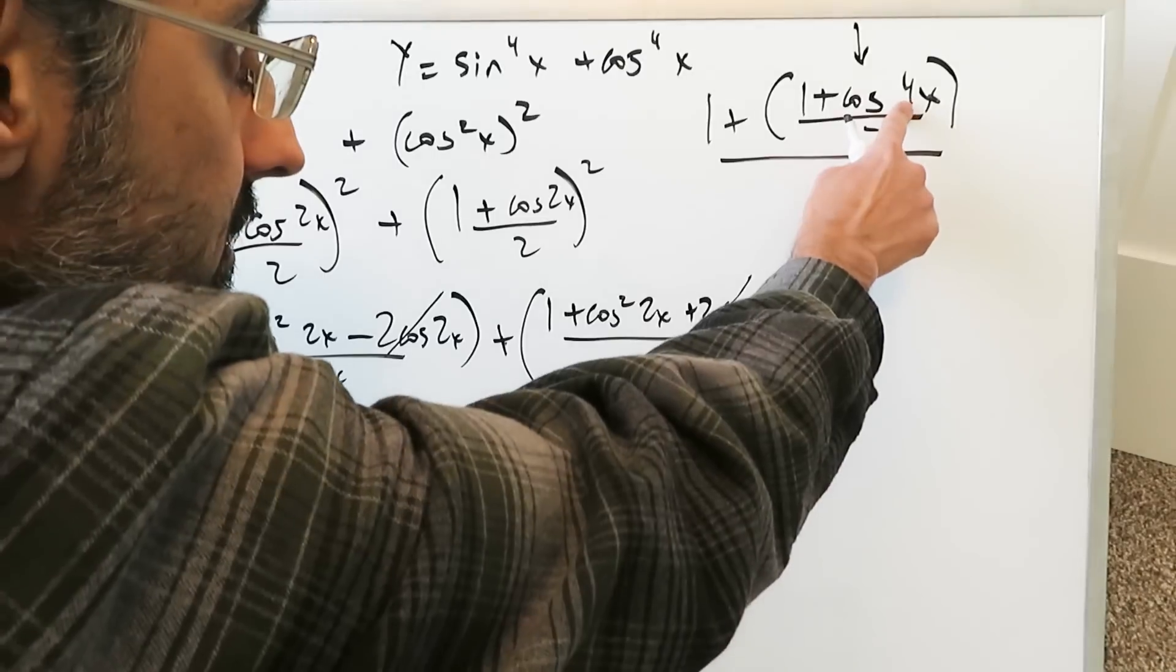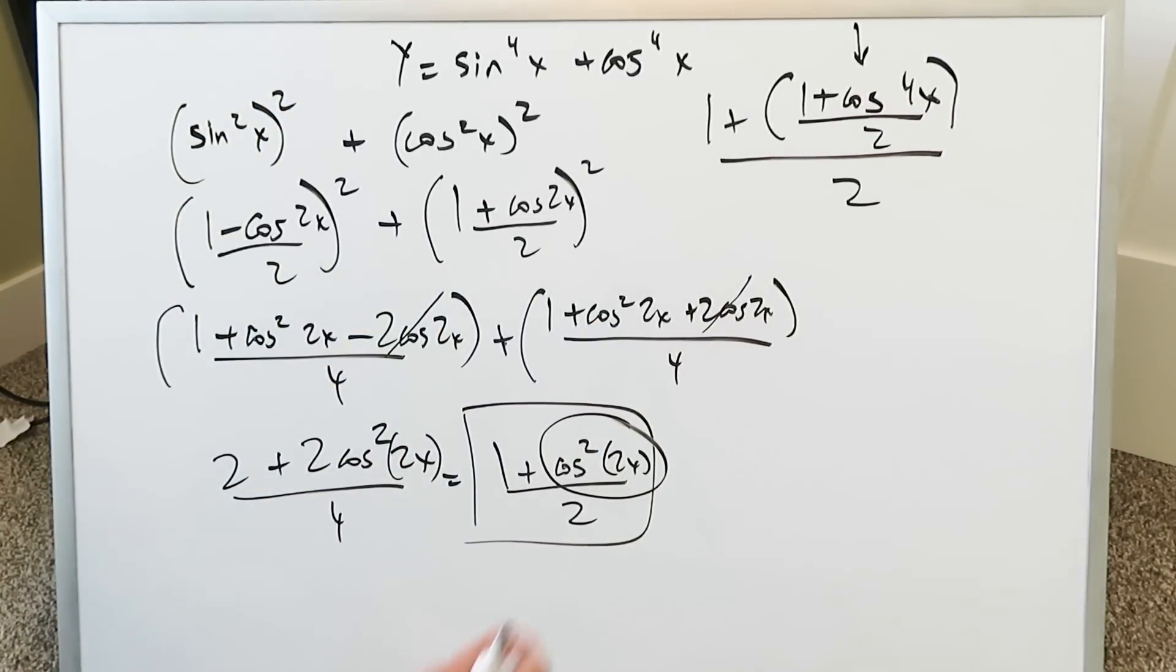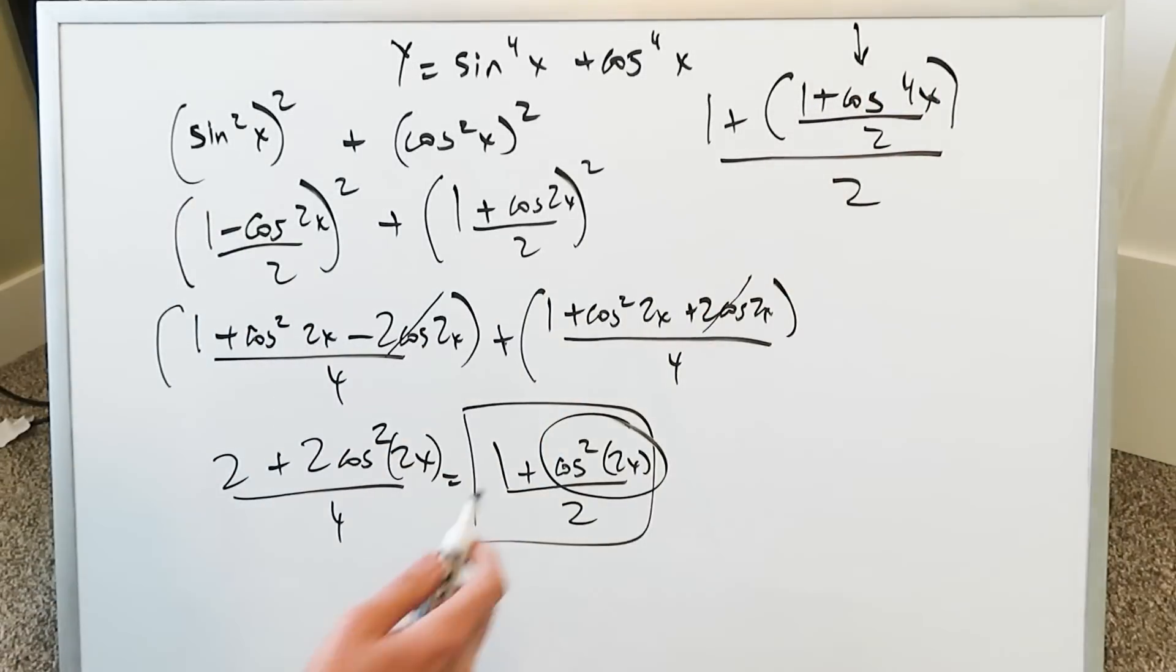You have a 2x so when you expand it out it becomes a 4x. That's an error which some students can make and then it can throw everything off. That right there is the correct version.